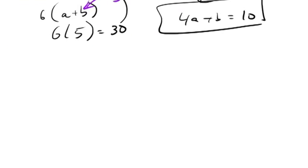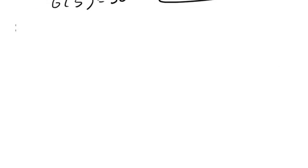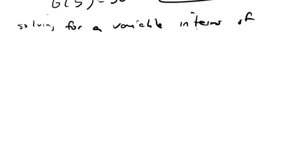Now, the second kind of problem involving equations you might see is solving for a variable in terms of—you'll see that phrase—another variable, or more than one, two variables. So what's an example of this? A problem might say this.